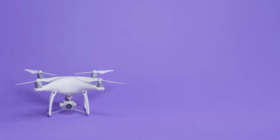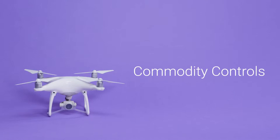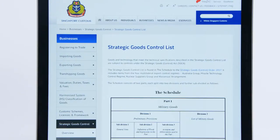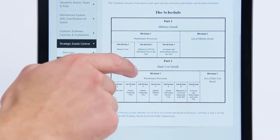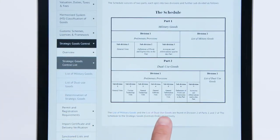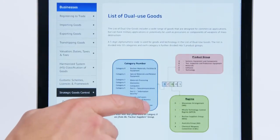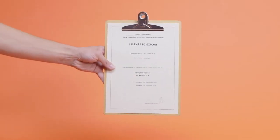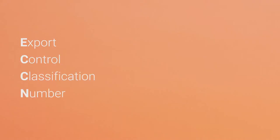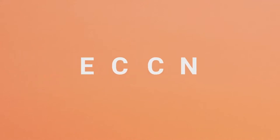Now let's go through the export controls. First are the commodity controls, which regulate the goods being exported. You need to check the type of goods that can and cannot be shipped to certain countries. For example, are you shipping dual-use items like drones that could be used for military purposes? If so, you may need an export license. To check this, see if your goods have an Export Control Classification Number, better known as an ECCN, on the Commerce Control List online. If it does, you may need an export license.